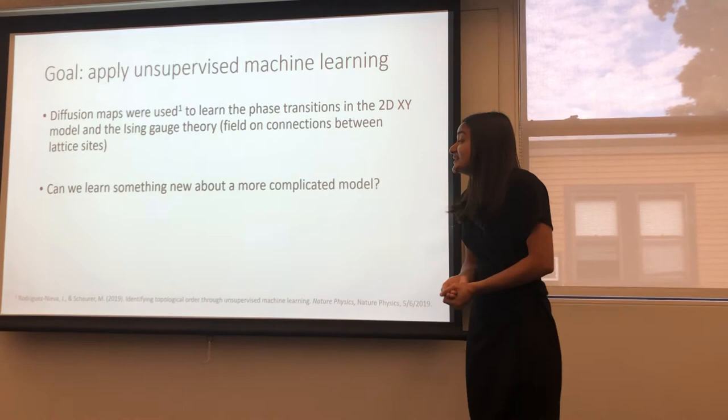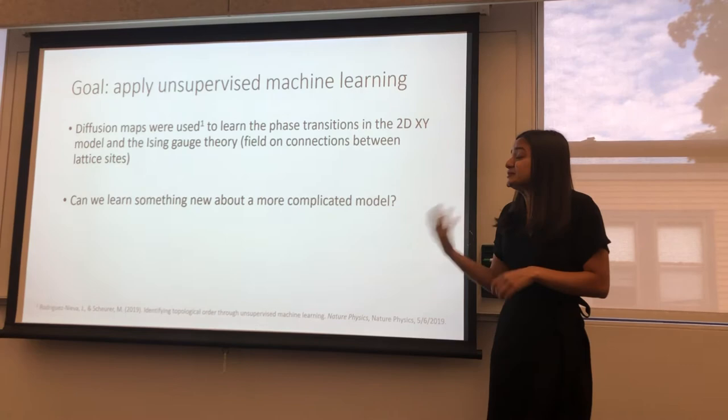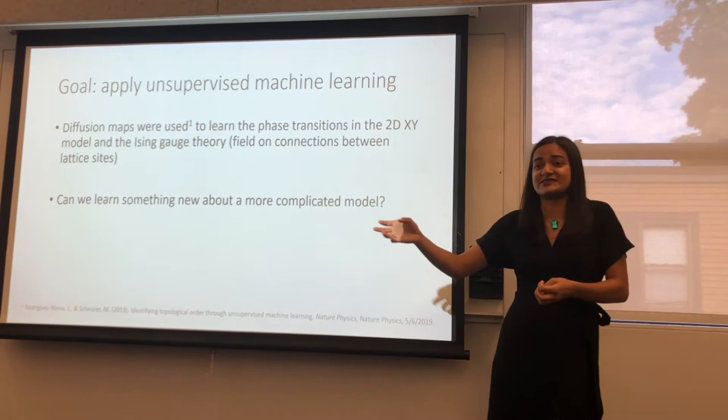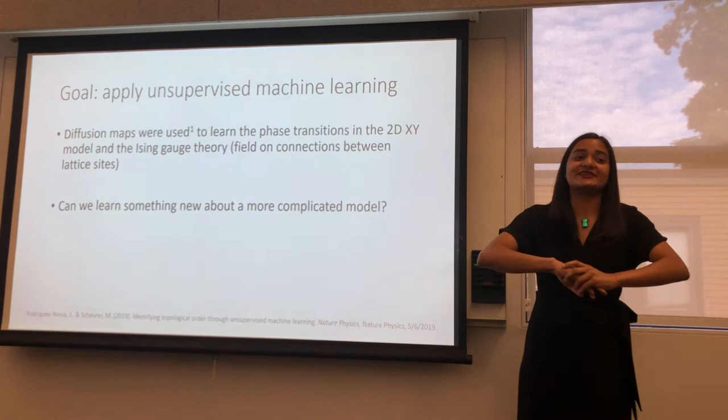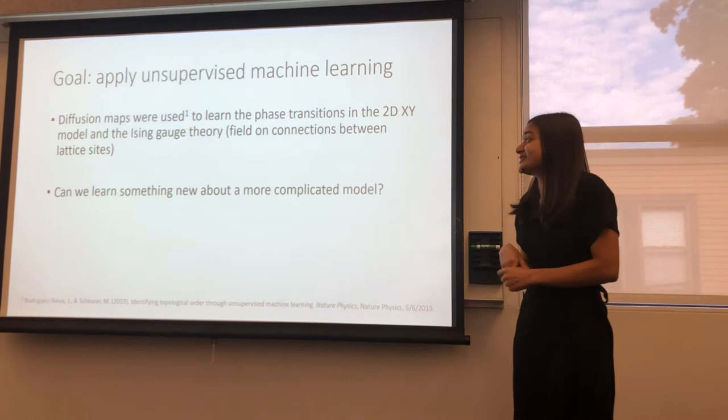So just very quickly, the difference between supervised and unsupervised machine learning. In supervised machine learning, you will label samples. So for example, if I was doing the 2DXY model, I would give it a bunch of samples that are in the topological phase, a bunch of samples that are in the non-topological phase, and I would tell it how to classify, basically. But in the case of unsupervised machine learning, you don't give it any labels. You just give it a bunch of data, and you say, do your best to find some sort of structure. And so that's why unsupervised machine learning is a little bit more interesting in this context, because we don't inject any physics into the system.